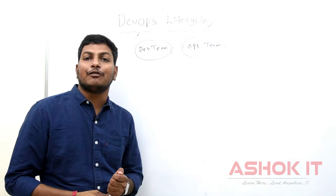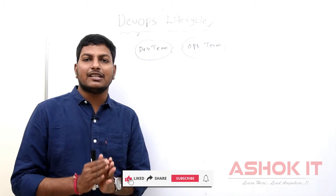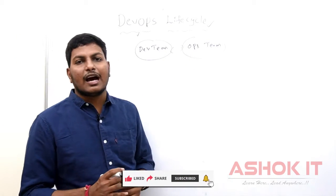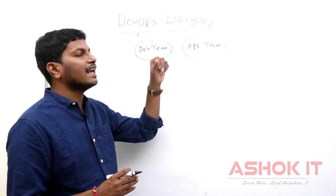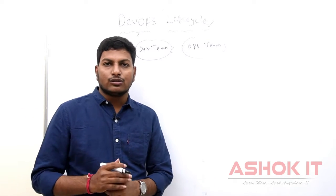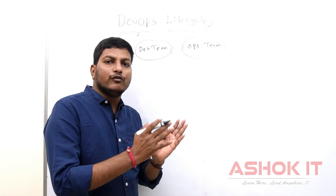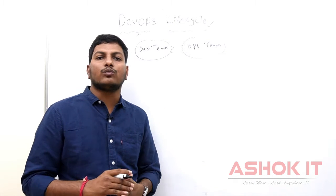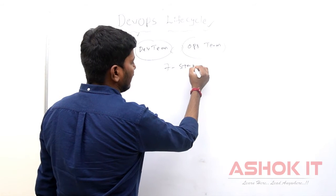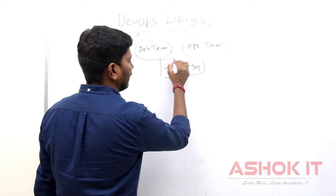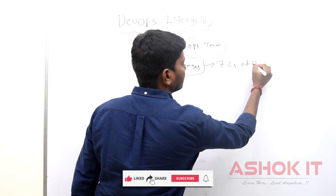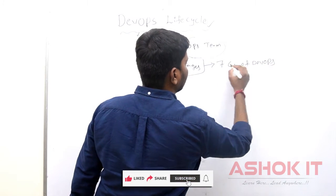DevOps is a set of practices to simplify our application development and delivery process. In order to develop and deliver our applications to clients, we follow a lifecycle — the software development lifecycle. A lifecycle is a methodology which represents from start to end what work has to be done. Here we can see there are seven stages available in our DevOps lifecycle.